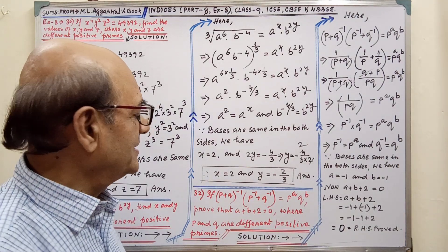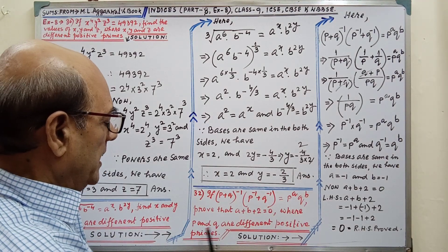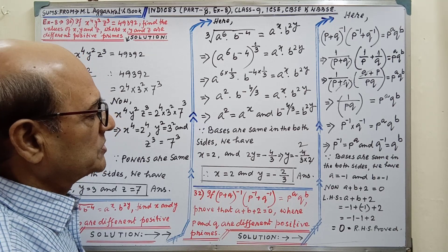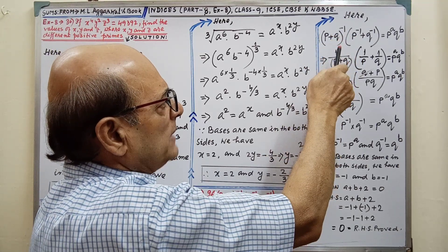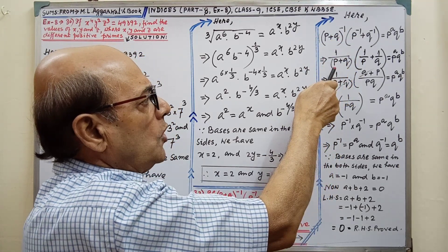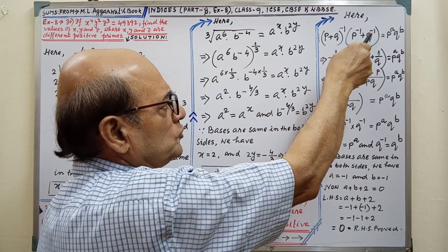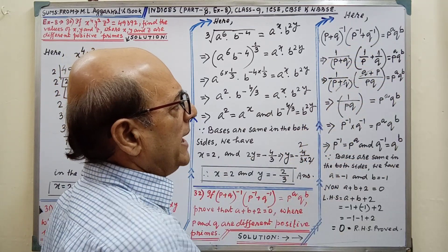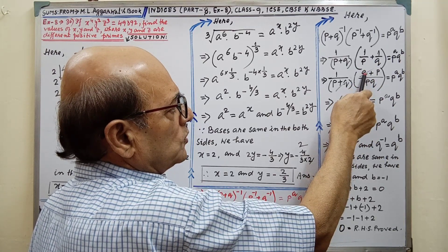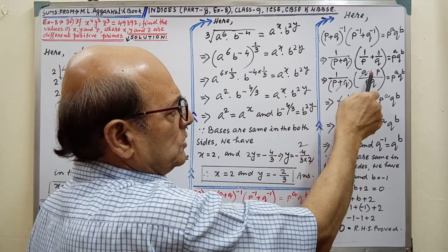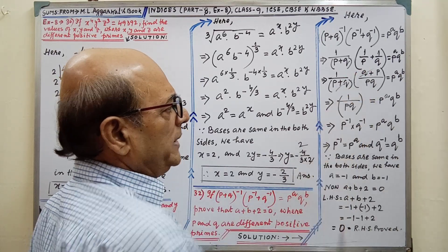Next sum. If this equals this, prove that this equals 0, where p and q are different positive primes. After writing the sum, we have to simplify. This is whole to the power minus half. This is why we may write 1 by (p plus q). Here, p to the power minus 1 is 1 by p and q to the power minus 1 is 1 by q. It will remain as it is. Then we have to find the LCM of p and q, that is pq, with q and p in the numerators. We get (p plus q) and (q plus p), that means (p plus q). These two factors are the same, so they will be cancelled.